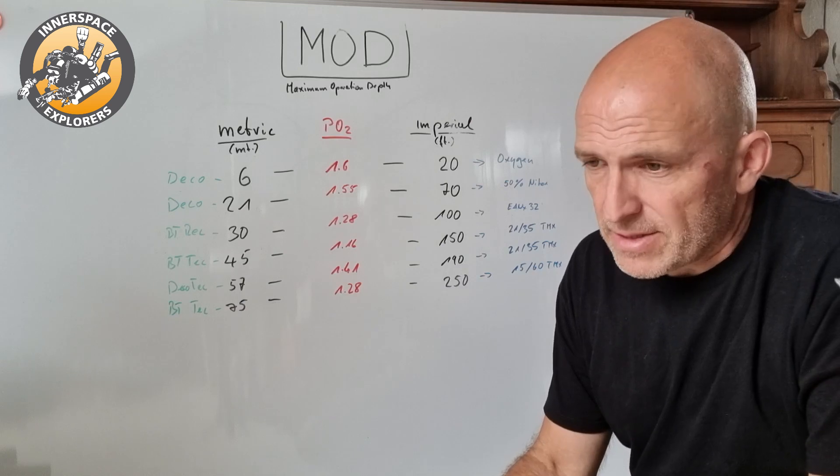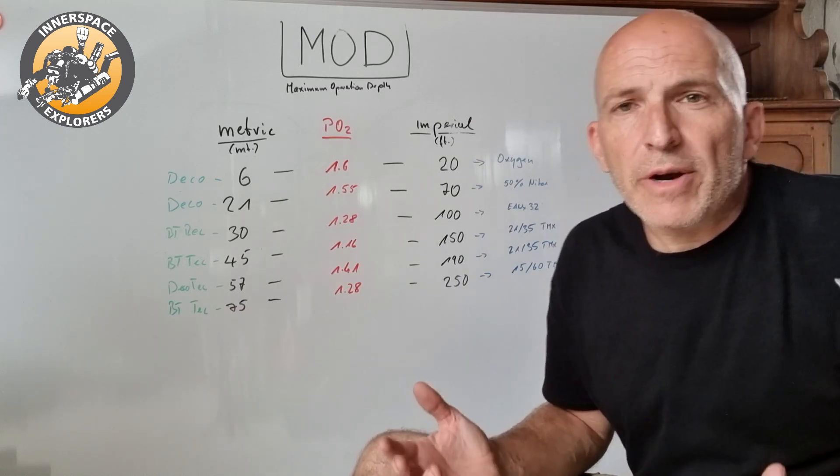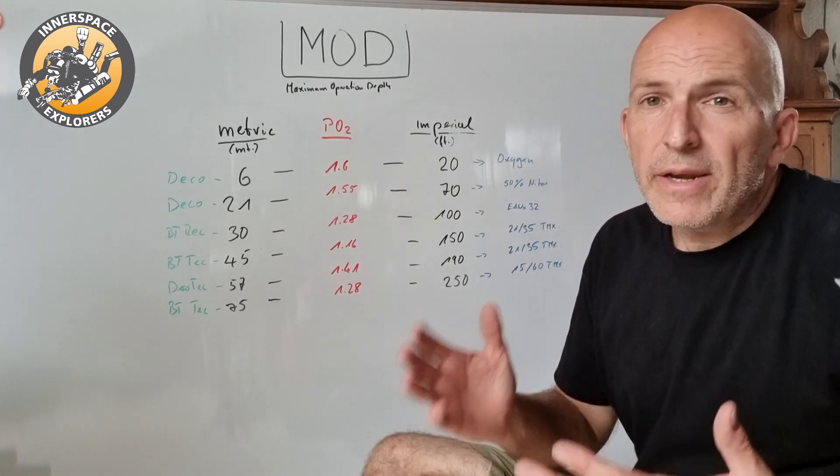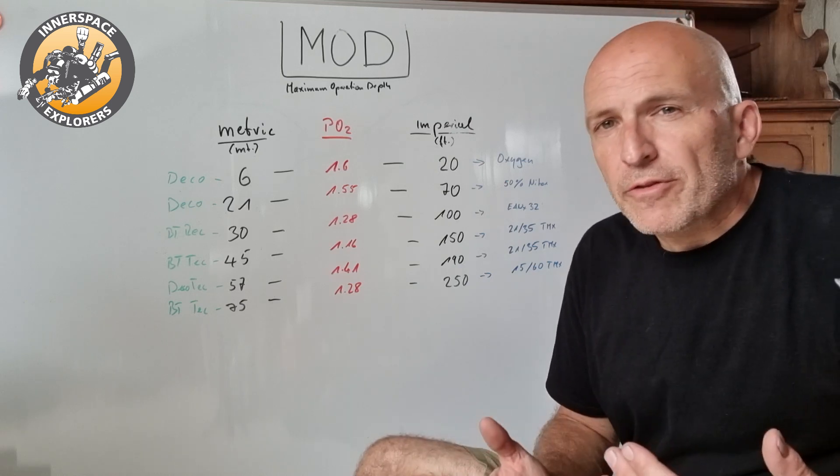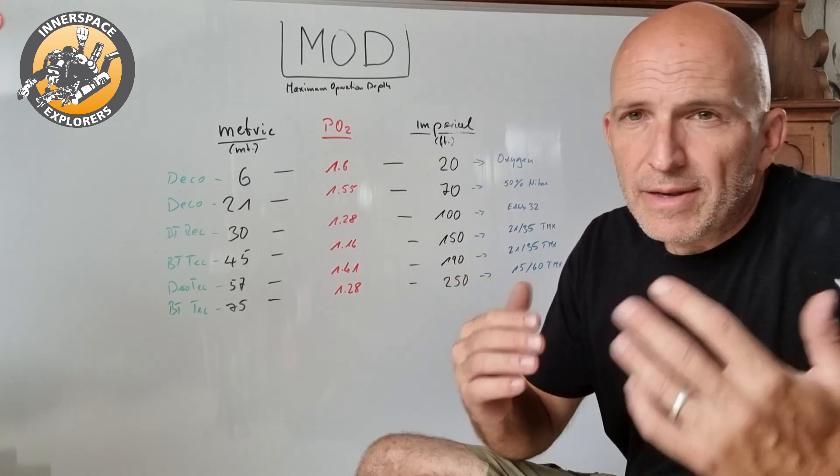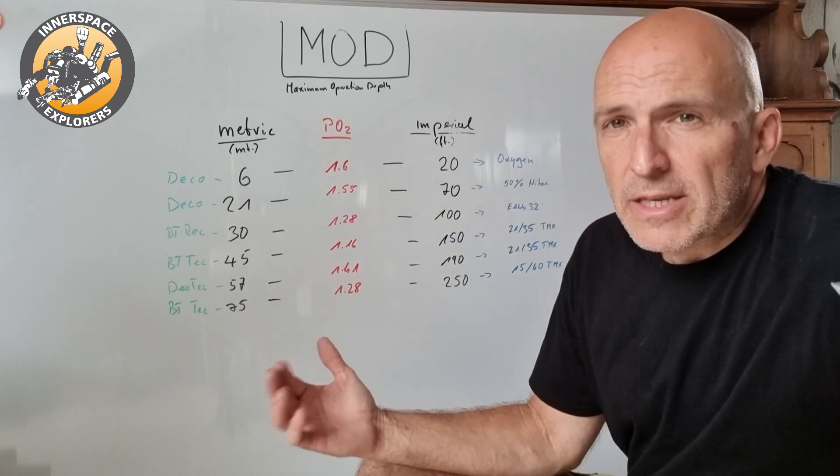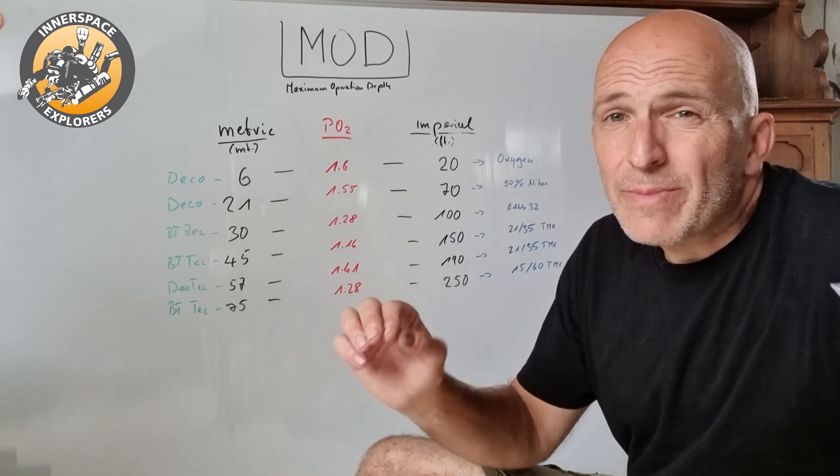If I use this tank as a bottom gas, let's say as a bailout gas for my rebreather, I do a trimix dive on my rebreather in the 50-meter range. My open circuit bailout gas would be 21/35 for example, it could be 18/45, depending on which level I'm at with the rebreather and what's my defined maximum depth. Let's say that's why I'm taking this tank with me. It would be labeled 45 which is my switch depth.